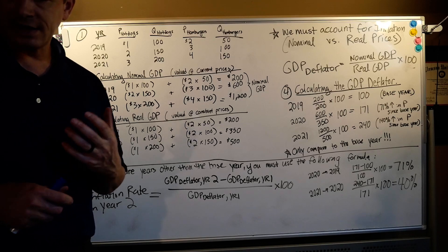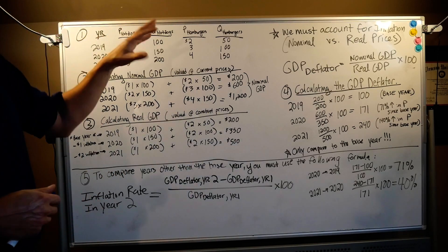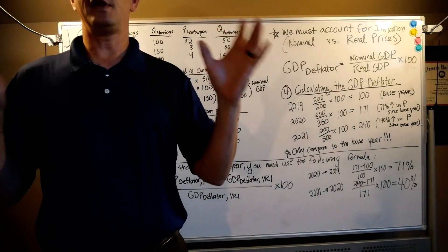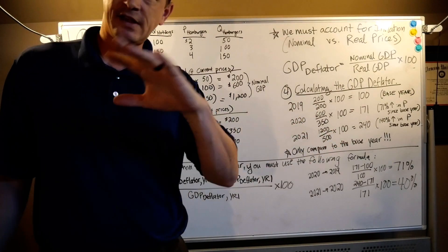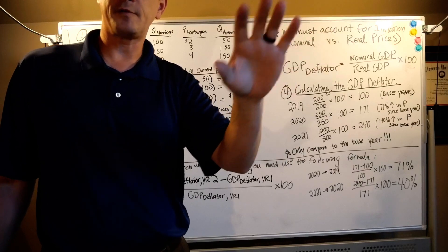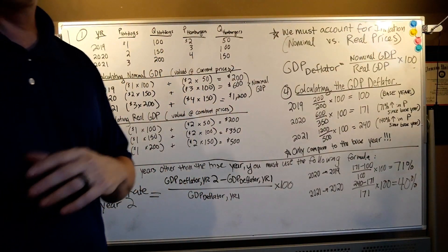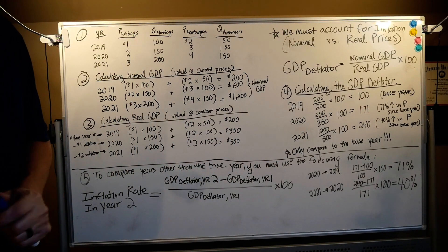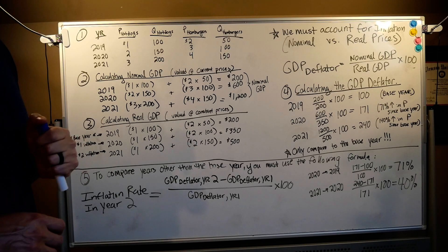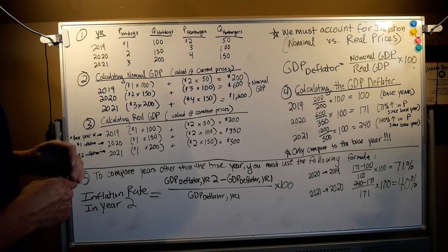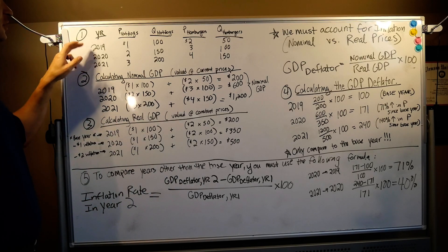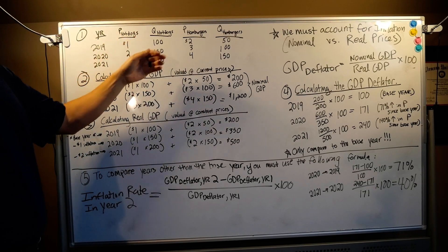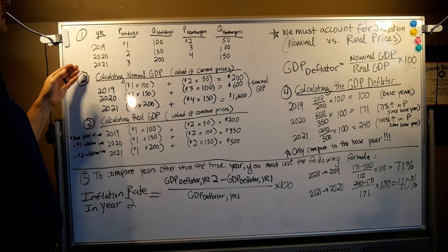Let's start at the top. I like to call this my hot dog economy — hot dogs and hamburgers. We're going to measure GDP with the big assumption that the only things this economy buys and sells are hot dogs and hamburgers. Doesn't that sound like a utopia? So GDP here is simply consumption of hot dogs and hamburgers. I'm working off table two on page 196, section 10-4, looking at GDP in real versus nominal terms.